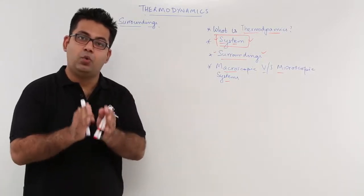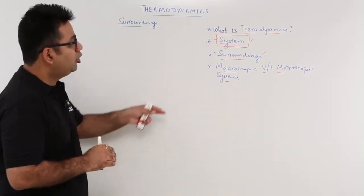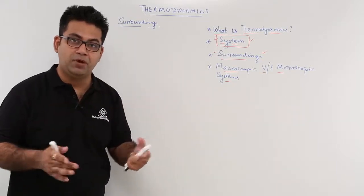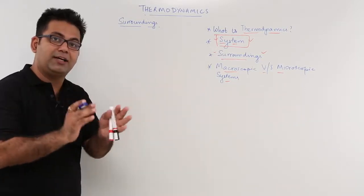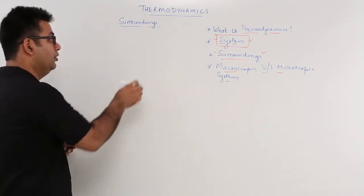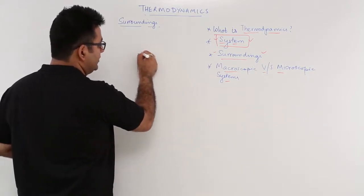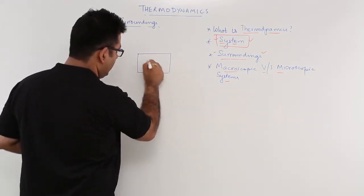Now, after understanding what is a system, let us now talk about surroundings. If you draw that diagram again which we drew in the last video, you had a room like this. This is the room.